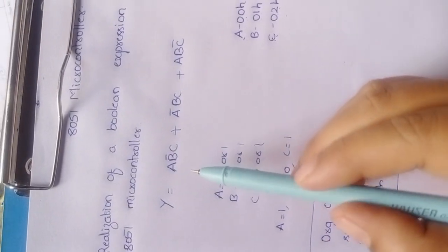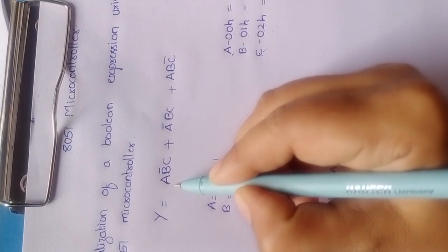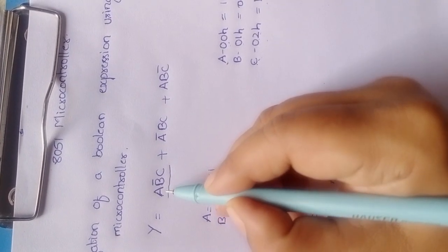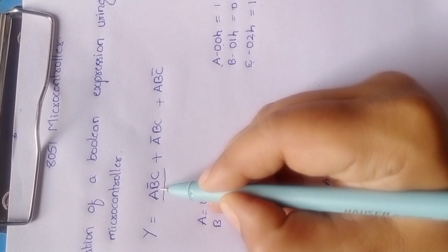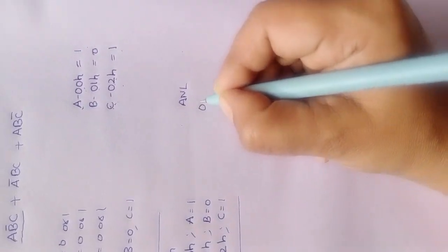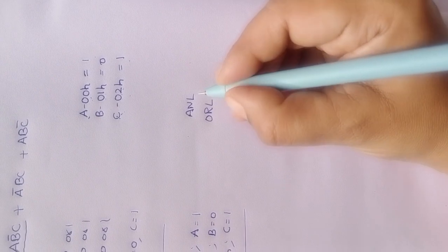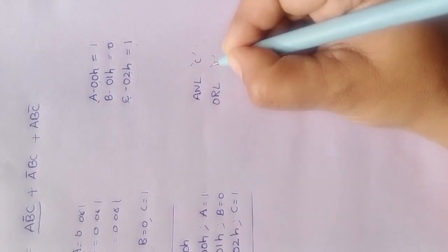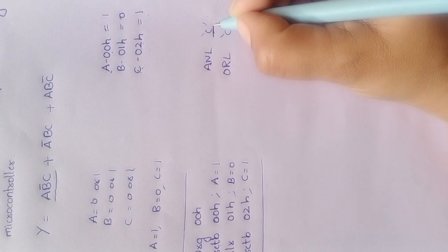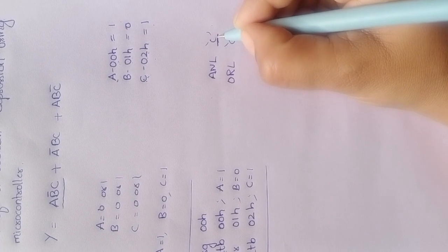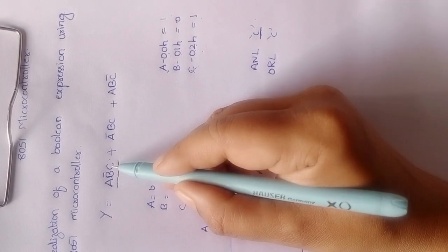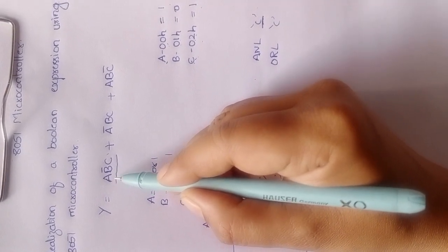Now we need to realize the boolean expression. First, let us realize the individual terms. To implement AND and OR operations, the 8051 assembly instructions ANL and ORL are used, and the carry flag C in the PSW register must compulsorily be used as either a source or destination. To realize the term a·b̄·c, we shall move one variable into C and then proceed further.